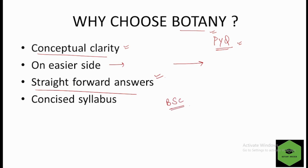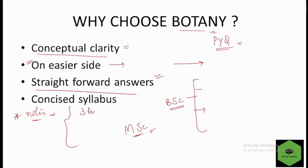Botany Optional is on the easier side for students who have done BSc or MSc in Botany, since a major portion of the syllabus has already been covered in graduation or post-graduation studies. You need not learn anything entirely new. All you have to ensure is that your notes are prepared in such a manner that within the three hours of the examination you can portray everything possible. I'll also make a video on how to prepare notes for Botany Optional — watch out for that.